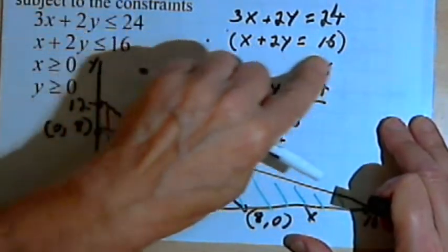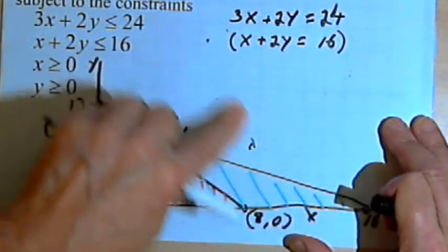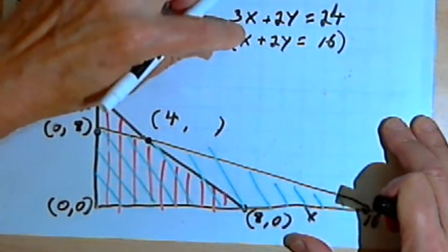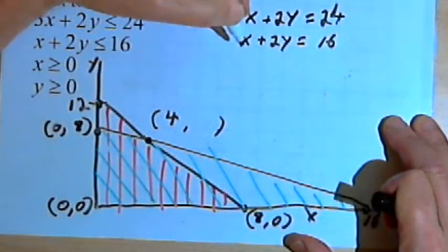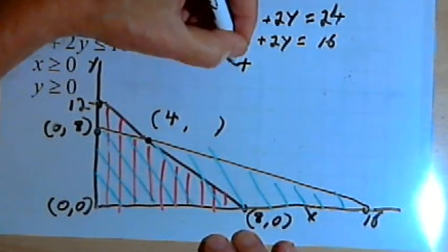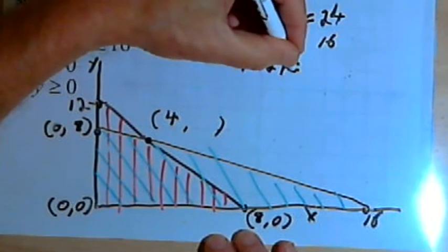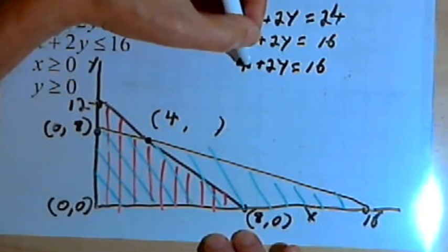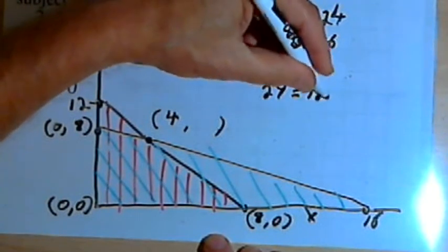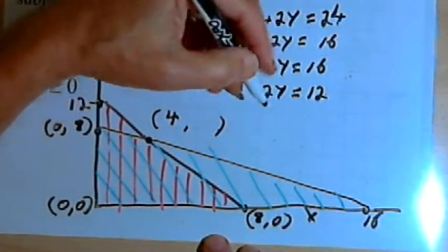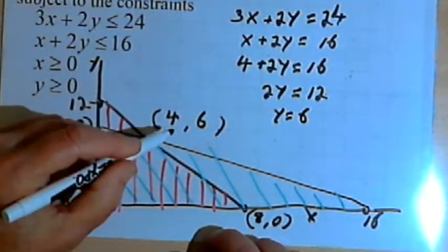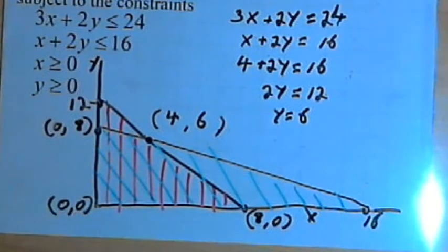Now let's go back to the equations and plug 4 in for x. I'll use the second equation: x plus 2y equals 16. I'll turn that into 4 plus 2y equals 16. When I subtract 4 from both sides, I get 2y equals 12. Then I divide both sides by 2, and I get y equals 6. So now I know the last corner point is 4, 6.